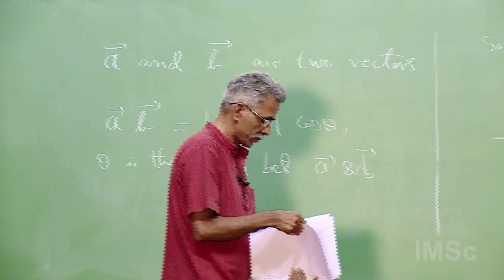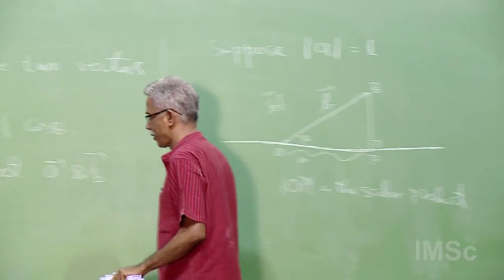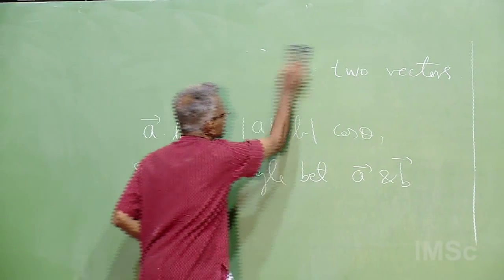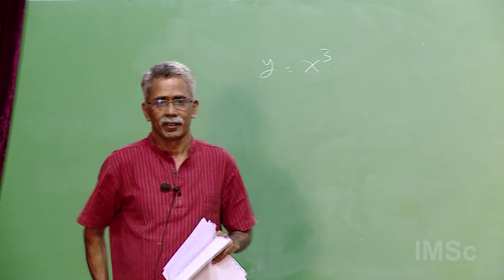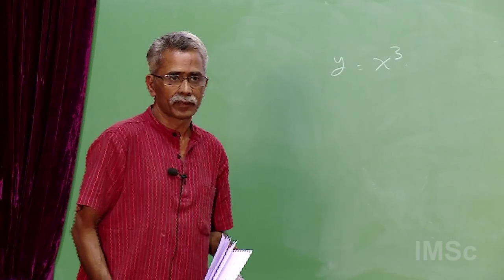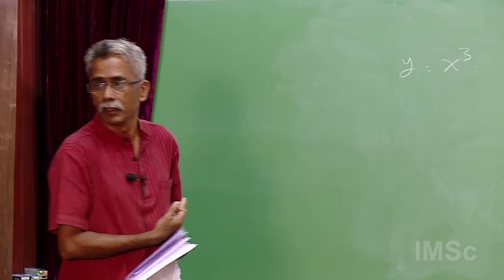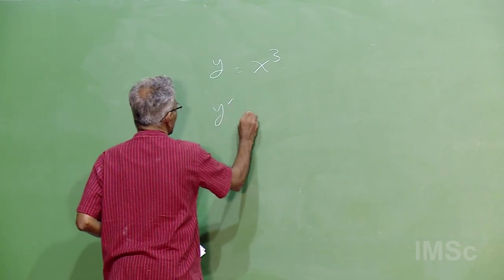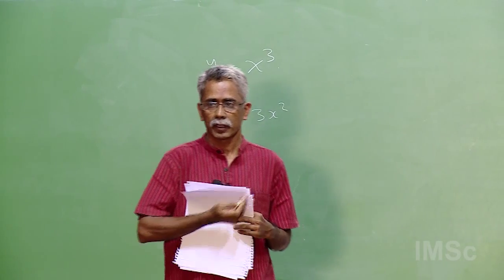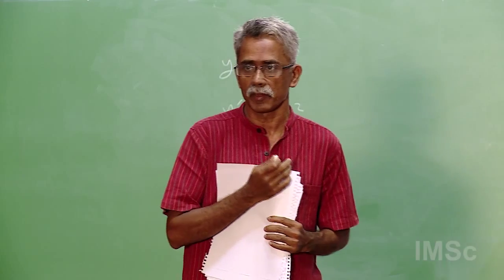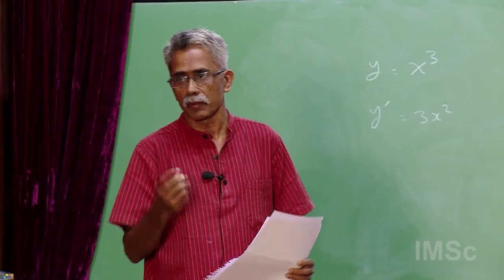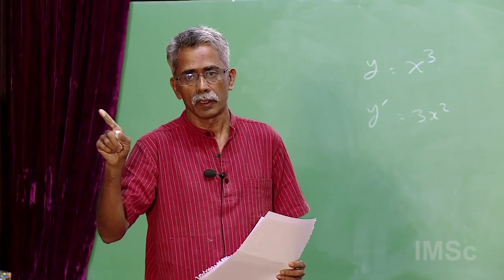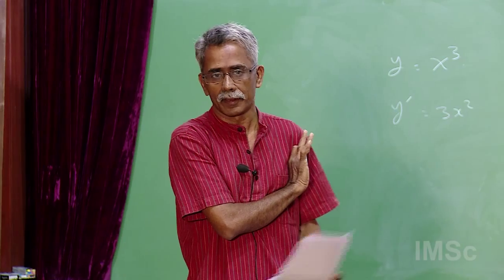There have been many questions about function concepts. One participant wanted to know: why is y = x³ strictly increasing? The person had in mind that the derivative y′ = 3x² vanishes at 0 — so is it correct to say it is increasing? Go back to the definition: strictly increasing means if A is less than B, then f(A) must be less than f(B). That condition is satisfied here.